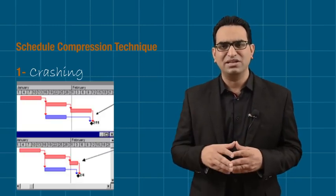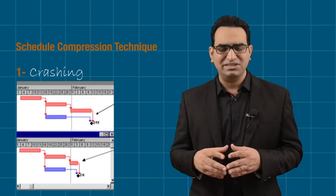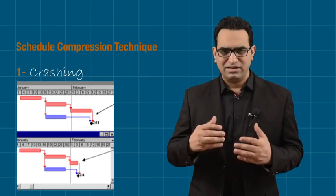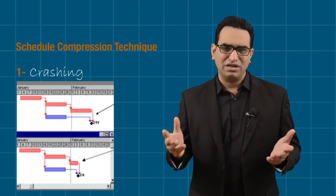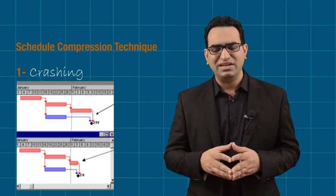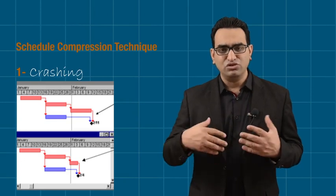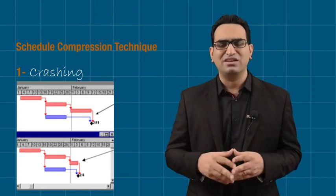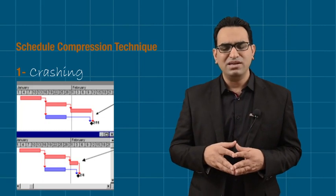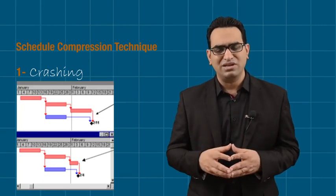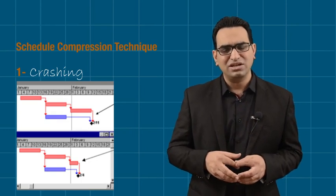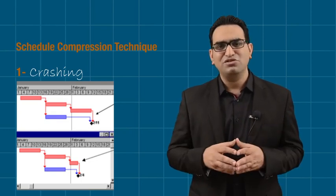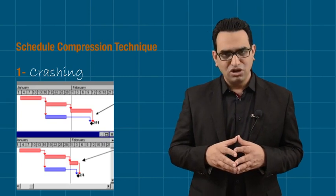Let's suppose we have 5 activities with 3 on the critical path and a total duration of 30 days. In crashing, I reduce one activity's duration from 10 days to 5 days by adding working hours or resources. When I trade time through crashing, I have to increase my cost. So crashing impacts the overall project duration, but the cost is increased.